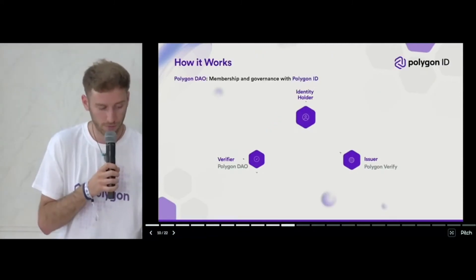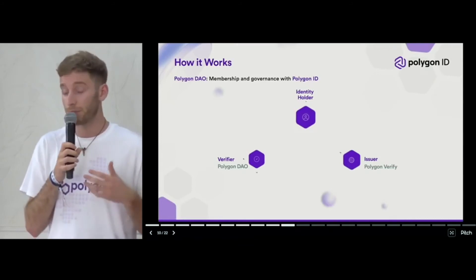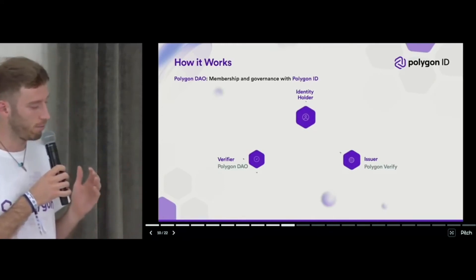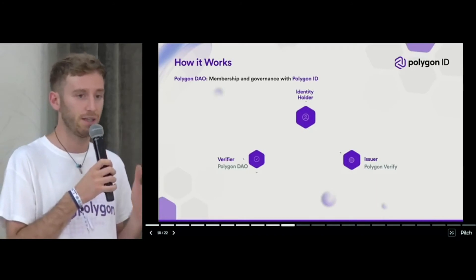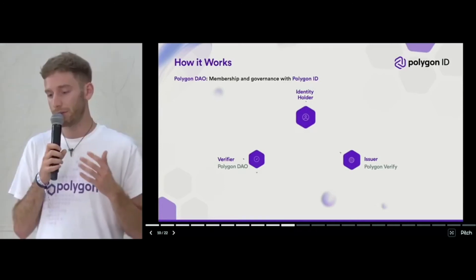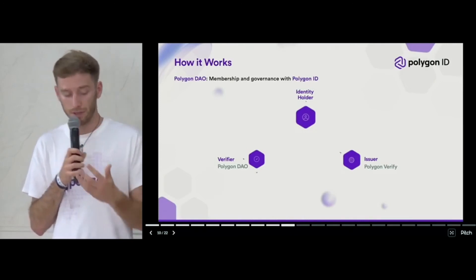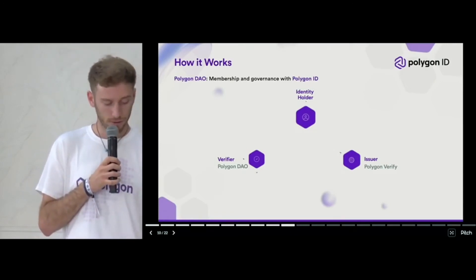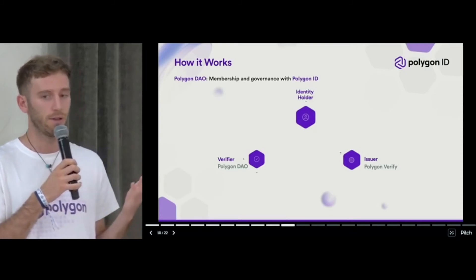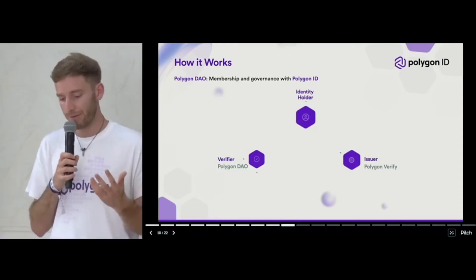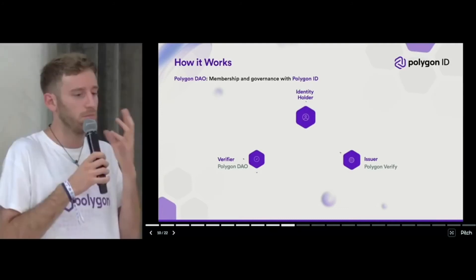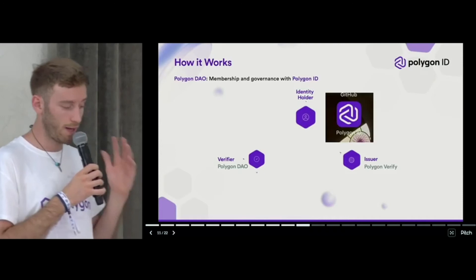Now we move to an example more closely related to our space — a proof of concept that we developed involving Polygon DAO. The idea is to use the Polygon ID identity layer to create a Sybil-resistant mechanism based on privacy. Polygon ID is able to verify that a person is actually an individual without giving up any privacy — without accessing any personal information, without requiring any doxxing, basically.